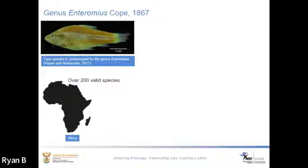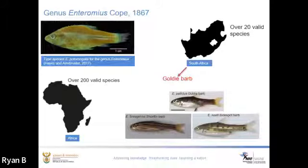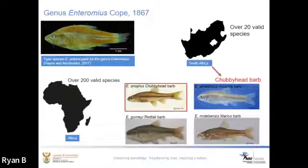The genus Enteromius from the family Cyprinidae represents a non-monophyletic group that includes most small-sized African diploid barbs. It contains over 200 varied species, making it the second largest fish genus in Africa and the third largest in the world. Over 20 Enteromius species are found in South Africa. Some belong to two broad groups: the goldie barb group, which have relatively small compact bodies, two pairs of barbels, and bright golden male breeding livery, and the chubby barb group, which differ mainly in male breeding colors and tubercles.